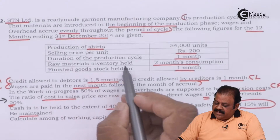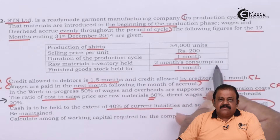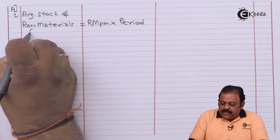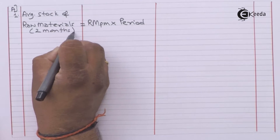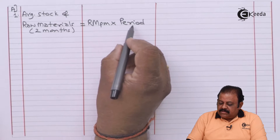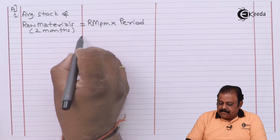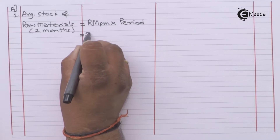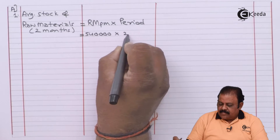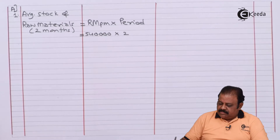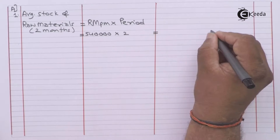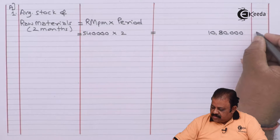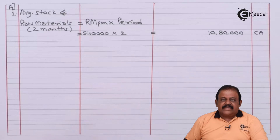Raw material inventory held is 2 months' consumption as given. Average stock of raw material equals raw material per month multiplied by 2 months, which is rupees 10,80,000. This will be part of current assets.